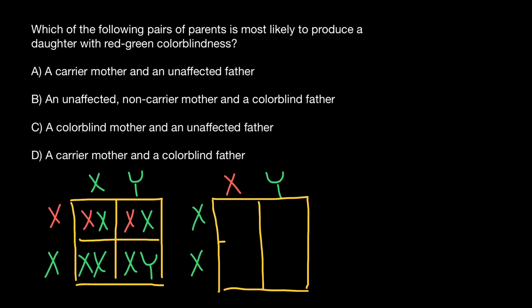Let's take a look at what kind of progeny this couple may have. These two females would inherit the defective X chromosome from the father's side and a normal X chromosome from the mother's side. None of the females are going to be affected, but they are going to be carriers and would have a normal phenotype.